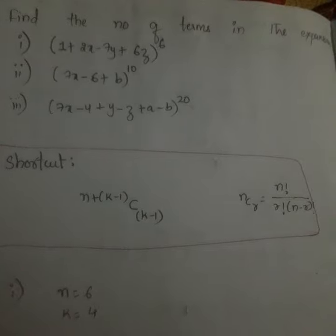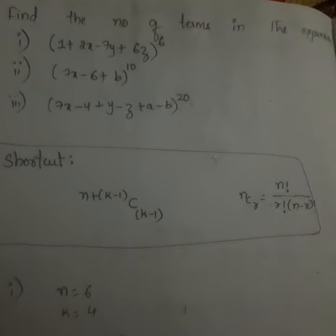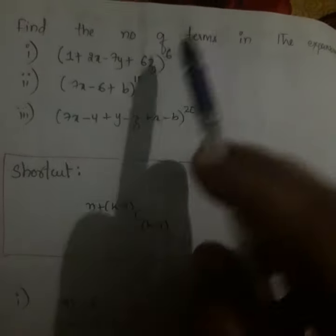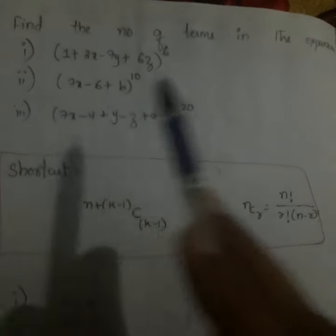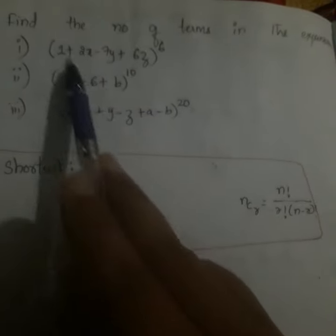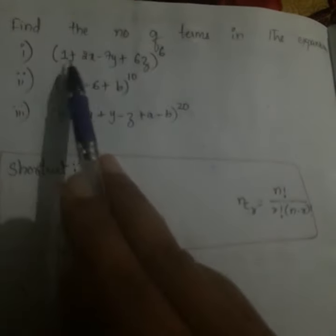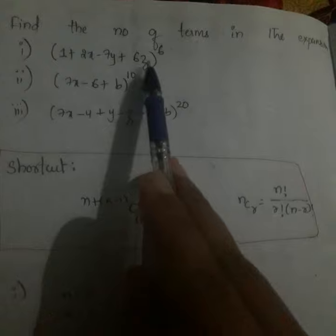In order to solve this problem, we require n value and k value. n will be the power in the expansion. Whereas k is the number of terms present in the expansion - whatever terms we can see, that is the k value.